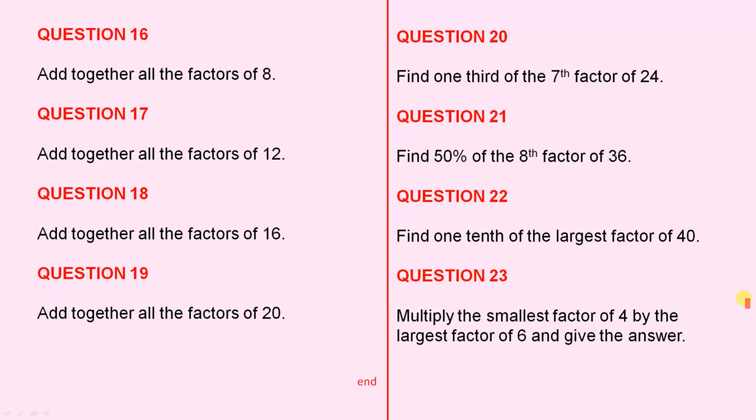Now here are some interesting questions, the last four. Question 20: Find one-third of the seventh factor of 24. Question 21: Find 50% of the eighth factor of 36. Question 22: Find one-tenth of the largest factor of 40. Question 23: Multiply the smallest factor of 4 by the largest factor of 6 and give the answer.